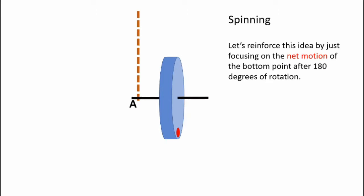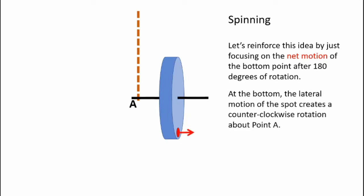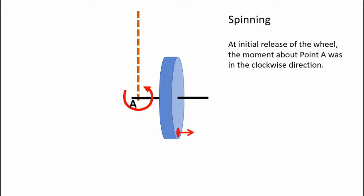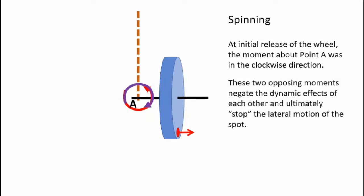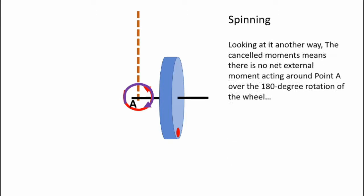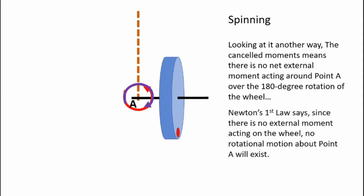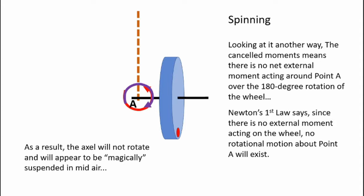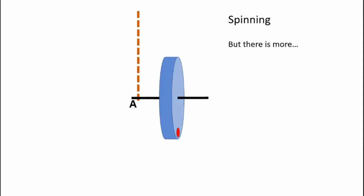Let's reinforce this by focusing on the net motion of the bottom point after 180 degrees of rotation. The lateral motion of the spot at the bottom creates a counterclockwise rotation about point A. However, at the initial release of the wheel the moment about point A was in the clockwise direction. These two opposing moments negate the dynamic effects of each other and ultimately stop the lateral motion of the spot. The same holds true for the point on the back side of the wheel. Looking at it another way, the cancelled moments mean there's no net external moment acting around point A over 180 degrees of wheel rotation. Newton's first law says since there's no external moment acting on the wheel, no rotational motion about point A will exist. As a result the axle will not rotate and will appear to be magically suspended in air.